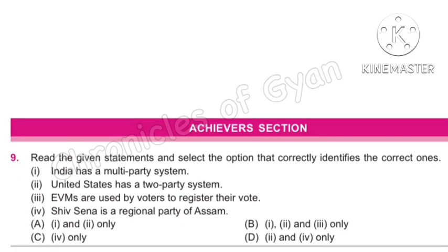Question 9: Read the given statements and select the option that correctly identifies the correct ones. Statement 1: India has a multi-party system. Multi-party systems are those in which more than two parties are represented and elected to public office; countries like Australia, Canada, Nepal, and Pakistan also follow this system. Statement 2: The United States has a two-party system. This is correct — the two parties being the Democratic Party and the Republican Party.